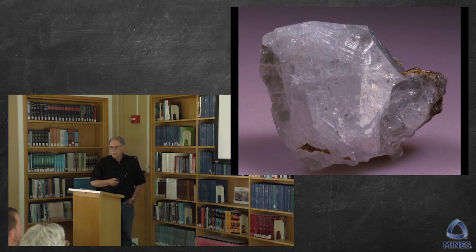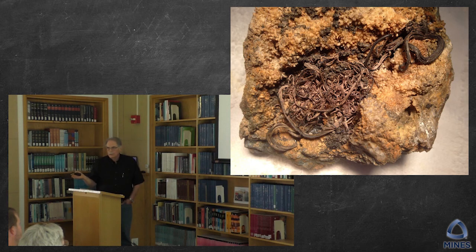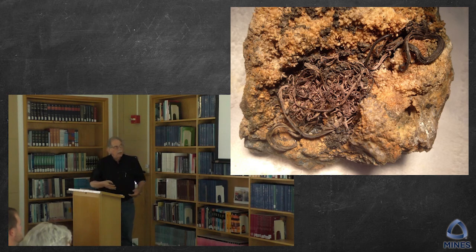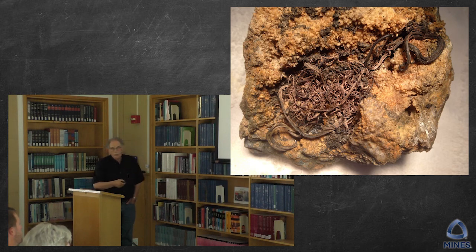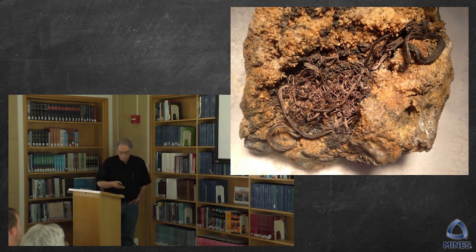This is a specimen of anglesite, which is lead sulfate — and that's probably the best anglesite crystal from Colorado that is in existence. It's about an inch and a quarter in diameter, and that is huge for Colorado. This is what also caught everybody's imagination — those are wires of silver on a very rusty quartz matrix. All of this knobby-looking stuff is little bitty crystals of quartz. From top to bottom, that's probably four inches across — a nice blob of wire silver. It has not been cleaned; this is the way you would find it near the surface.